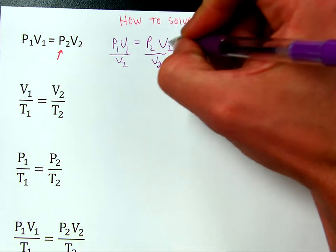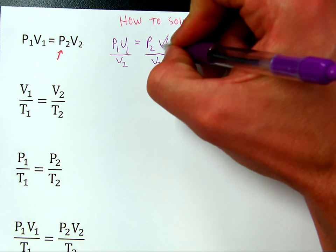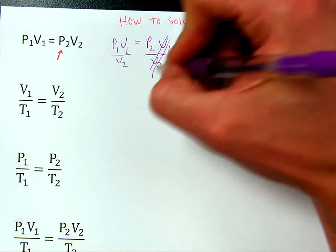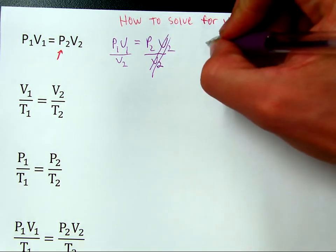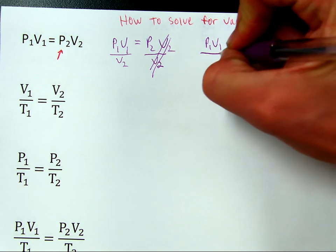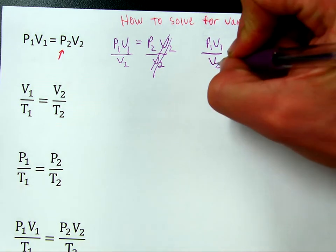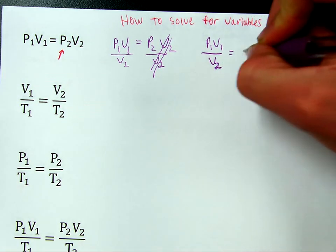Now, when I do that, volume 2 cancels volume 2. So this variable cancels away, leaving behind just this one. And thus, the final version is P1 V1 over V2 equals P2.